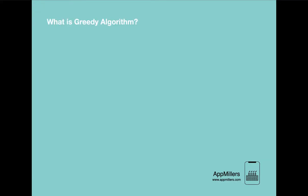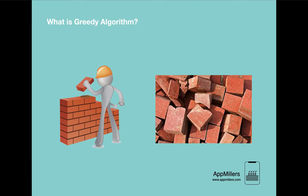To make things very clear, let's understand a greedy algorithm using a real-life example. Let's say we have a pile of broken bricks and our task is to create a wall out of them. Using common sense, the first thing we would do is select the best bricks first and put them in our wall, then continue selecting the second best, the third best, and so on.